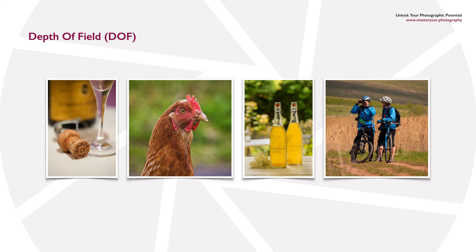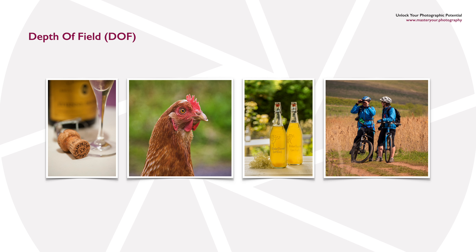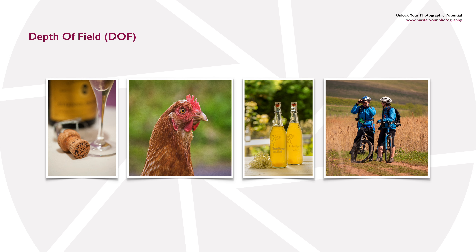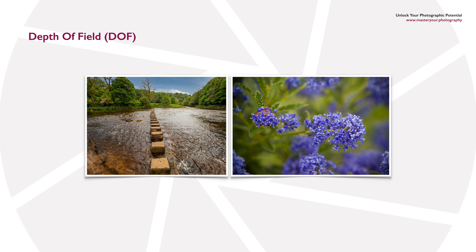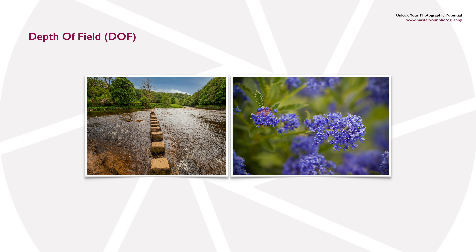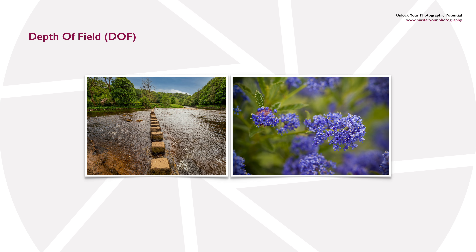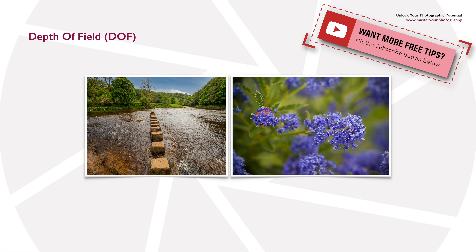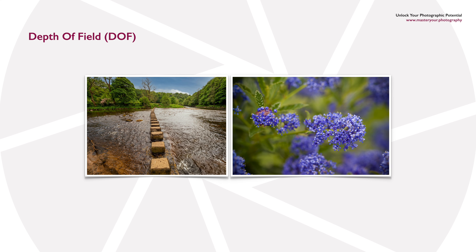For portraits or any subject where you want to isolate it against a messy background, aim to use a long focal length — that's a telephoto lens — and a wide aperture, and this will give you a very shallow depth of field. If you're shooting a landscape and want to maximize sharpness from foreground to background, use a wide angle lens — a shorter focal length — and opt for a smaller aperture, something like f16 or even higher. If you can use the hyperfocal distance as your focusing point, you're going to maximize that zone of acceptable sharpness, stretching from half the hyperfocal distance right through to infinity.